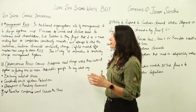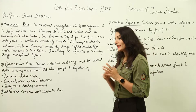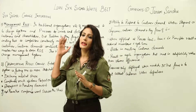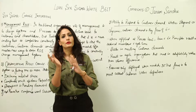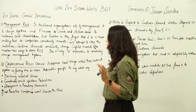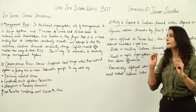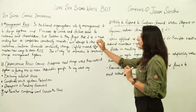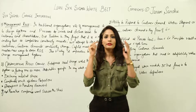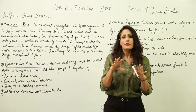The first point is management's role. In traditional organizations, the role of management is to design systems and processes to create and deliver value to customers and shareholders. Their approach was very narrow — they wanted to create a product which delivers value to the customer and shareholder.